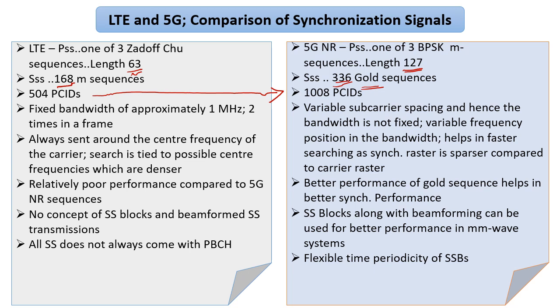That gives us more room to work with for small cell deployments. In LTE, the approximate bandwidth of the region where synchronization signals are sent is around 1 MHz, roughly 4.6 RBs, sent two times in a frame — a very fixed periodicity. All that changes in 5G because of various deployment options. First of all, because of variable subcarrier spacing, the bandwidth is not fixed.